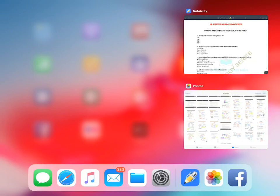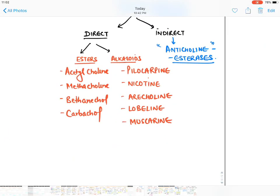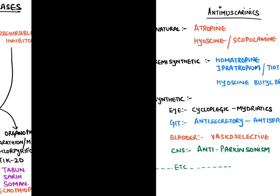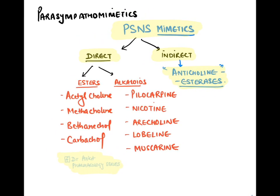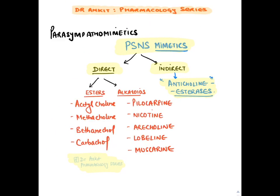The first class of drugs we will discuss is parasympathomimetics. These drugs increase parasympathetic activity in the body. Directly acting drugs act directly on the receptor and stimulate it. They end with the word 'esters' and have a 'col' word in between — like acetylcholine, methacholine, bethanchol, carbachol. Natural drugs end with 'ine': pilocarpine, nicotine, arecoline, lobeline, and muscarine. Muscarine is present in poisonous mushrooms; nicotine is present in the tobacco plant.